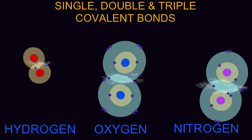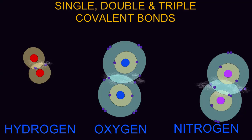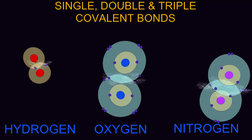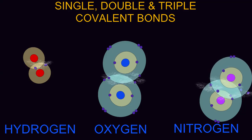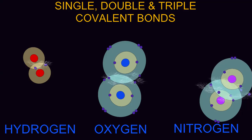In double covalent bonds, each atom shares two electrons, and this allows for each atom to have eight electrons in its outermost shell at least some of the time. So oxygen gas, O2, forms when oxygen atoms form double covalent bonds with each other.